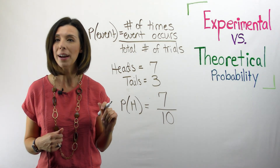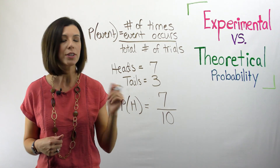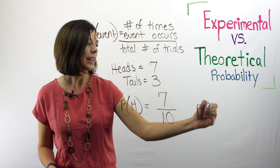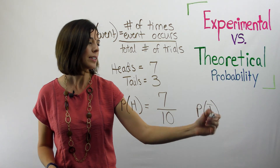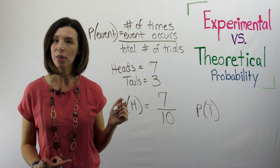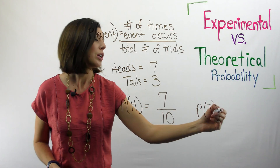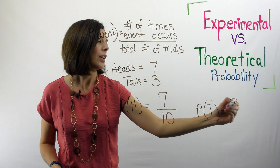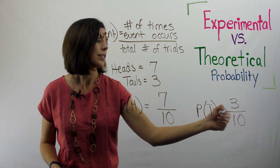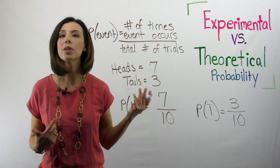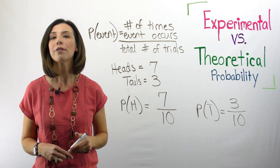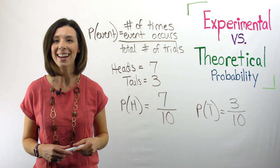Remember, you need to simplify if necessary — I don't need to in this case. When thinking about the probability of tails, in my case I flipped tails three times, so that would be three out of ten trials. Three tenths would be my experimental probability for flipping tails.